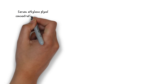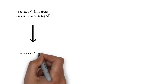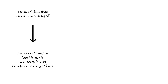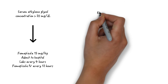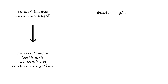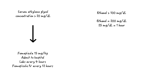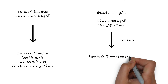A serum ethylene glycol concentration over 20 mg per deciliter requires treatment with fomepizole, loaded at 15 mg per kg IV. The patient should be admitted for Q4-hour laboratory testing and Q12-hour fomepizole dosing until the serum ethylene glycol concentration is below 20 mg per deciliter. If the patient's serum ethylene glycol concentration is well over 100 mg per deciliter, the patient may not initially need fomepizole therapy, as ethanol will prevent the formation of toxic metabolites. For example, if the ethylene glycol concentration is 200 mg per deciliter, assuming the patient metabolizes at most 25 mg per deciliter per hour, the patient will remain blocked by ethanol for the next four hours, after which fomepizole therapy should be initiated.